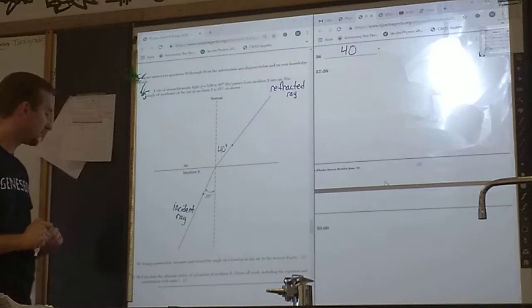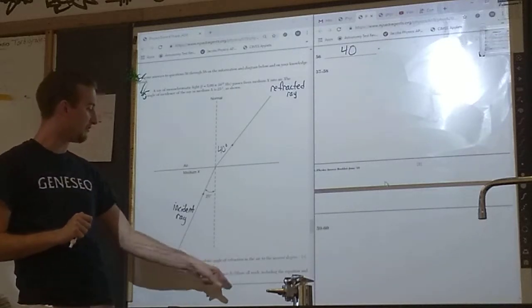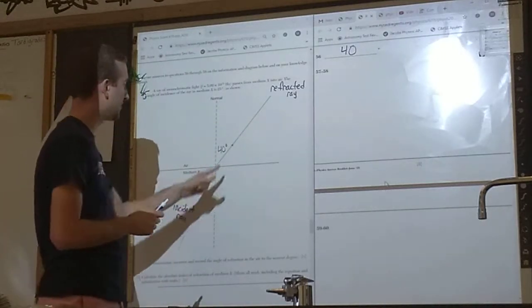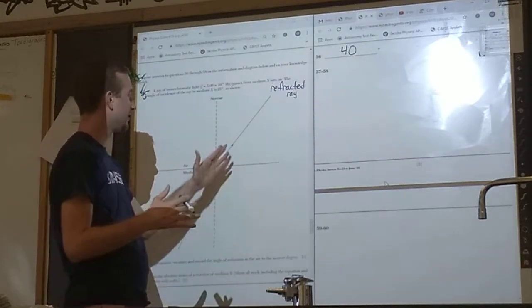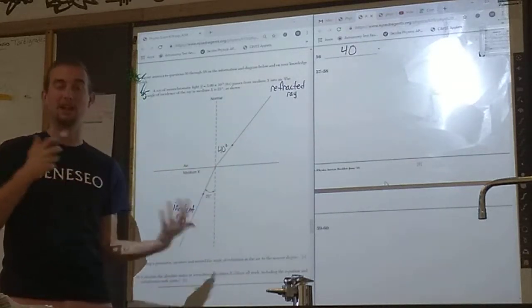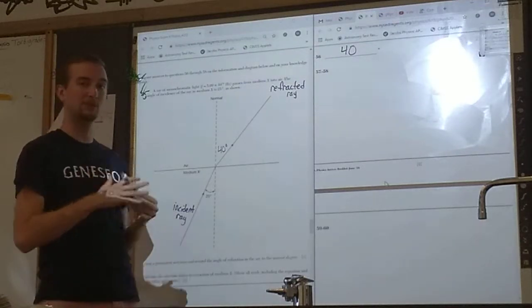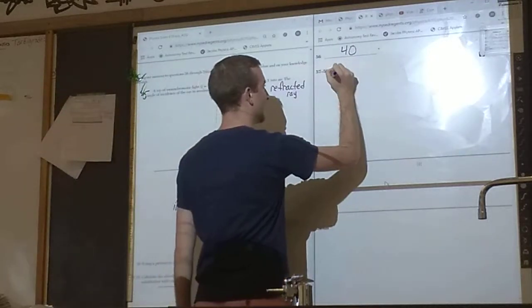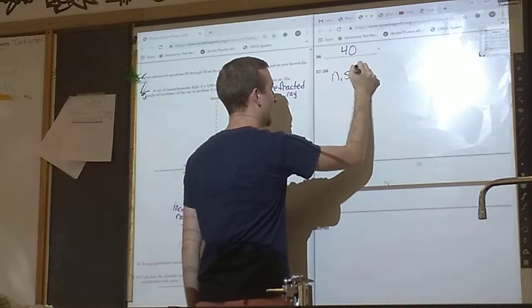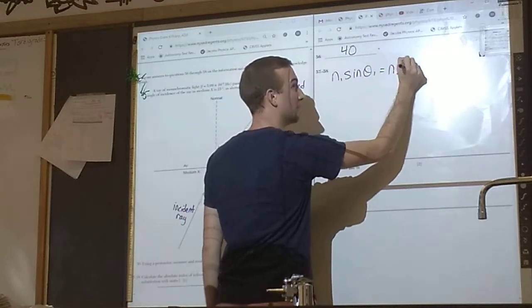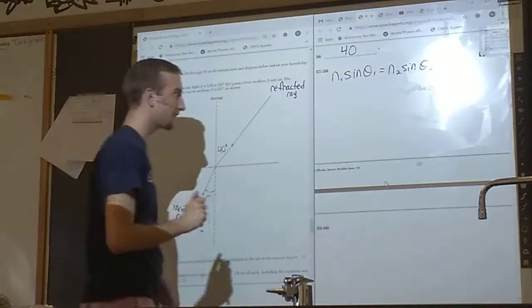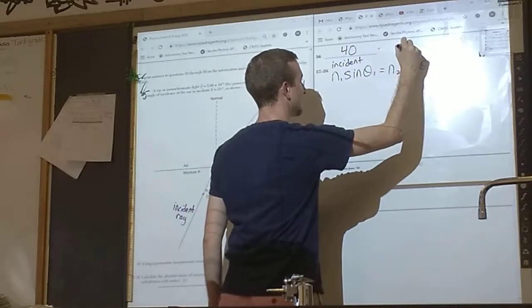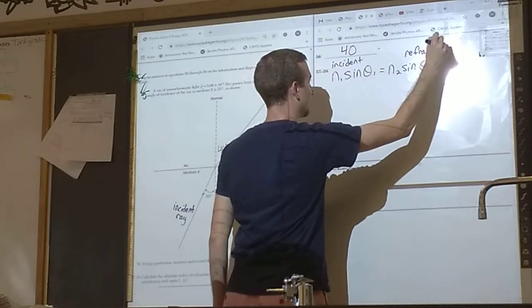Questions 57 through 58 say calculate the absolute index of refraction of medium X. Whenever we're dealing with refraction where we have light bending when it goes from one medium to the next, the way to calculate either one of the angles, either incident angle or refracted angle, or the index of refraction of either material, is to use Snell's Law. Snell's Law says n₁ sin(θ₁) equals n₂ sin(θ₂). This is the side that's the incident side, at least that's how I usually write it. And this is the side that is the refracted side.